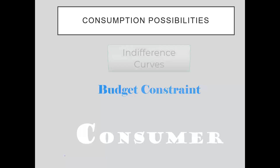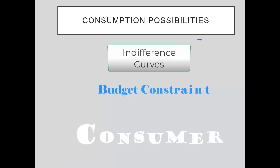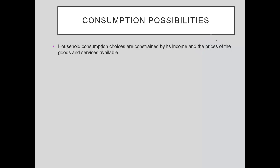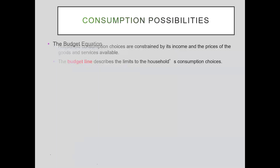How does a consumer decide how much to spend on a good and how to allocate her resources across different goods or choices? Even before we set up this model, we understand that a consumer has certain choices. Those choices, along with the budget or income and prices of the two goods, are constraints that the household or consumer faces, which are a function of income and prices, and place limits on how much they can spend.